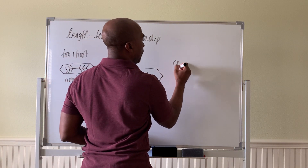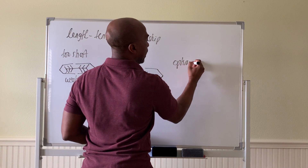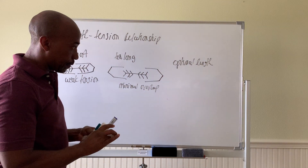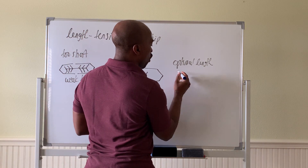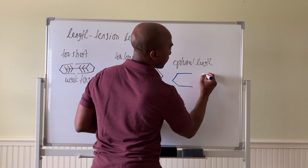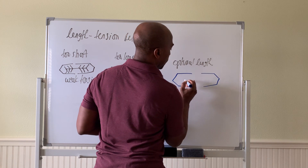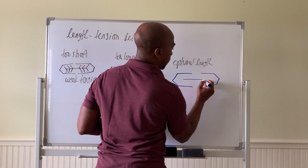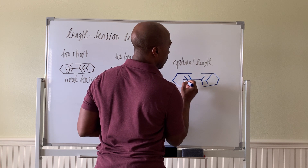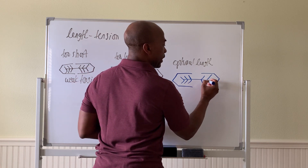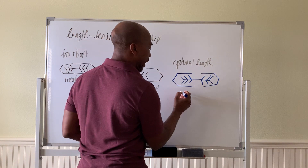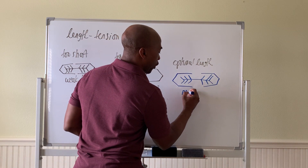At what's called the optimal length, the sarcomeres have enough overlap, so the myosin has enough overlap to create enough cross bridges to give you maximal force generation. This is best — most power at this level.